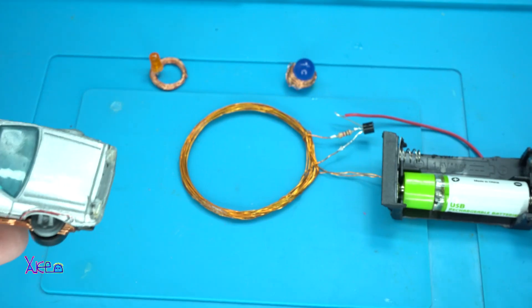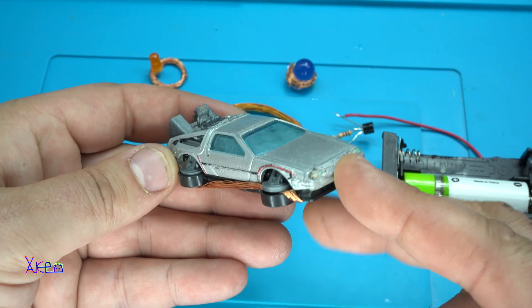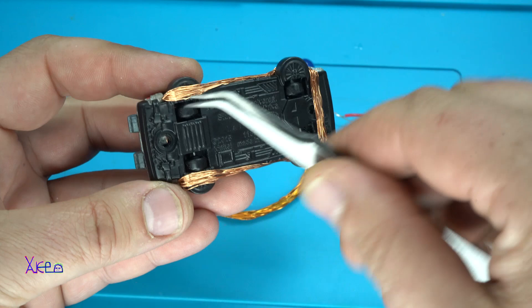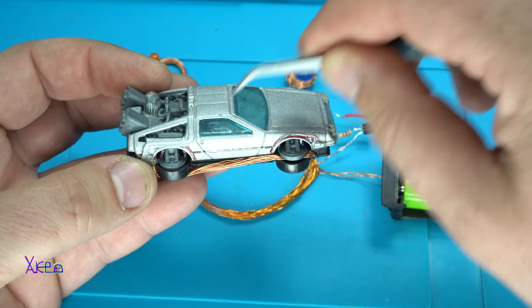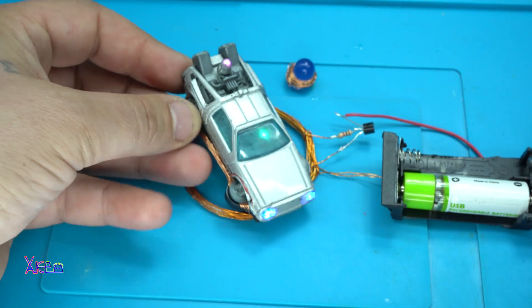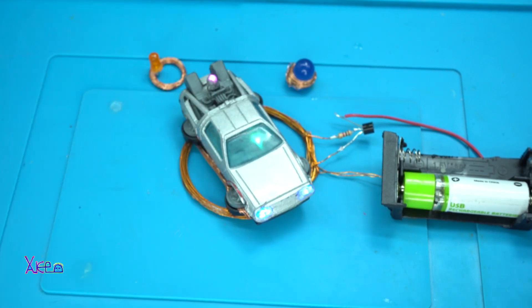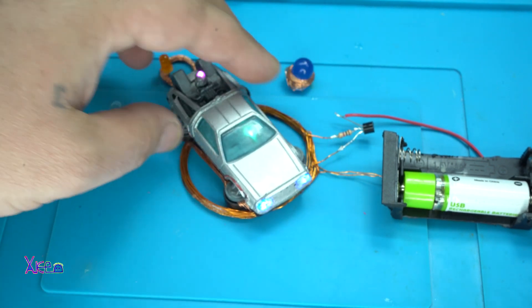You will ask what you can do with the wireless LEDs. Here is a very simple example. This is a car toy and I have placed a coil below the car and put some LEDs inside and take a look. Flying wireless DeLorean. Great.